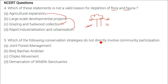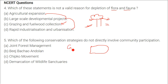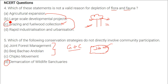The fifth question asks: which of the following conservation strategies does not directly involve community participation? The answer is the demarcation of wildlife sanctuaries. When we combine government policies with community participation, things go well — that is joint forest management, Beej Bachao Andolan, and others. But when you demarcate an area as a wildlife sanctuary, it does not involve community participation. So the answer is C.